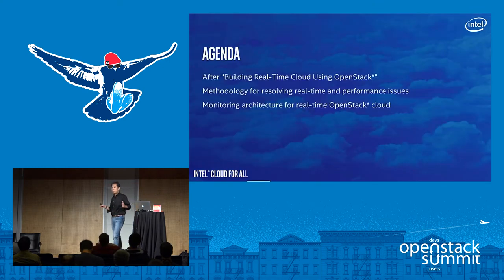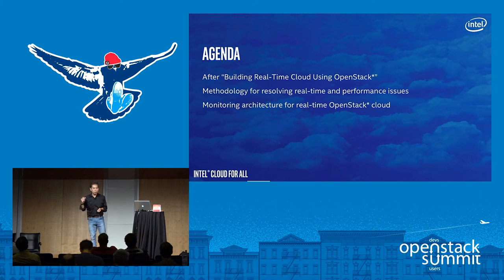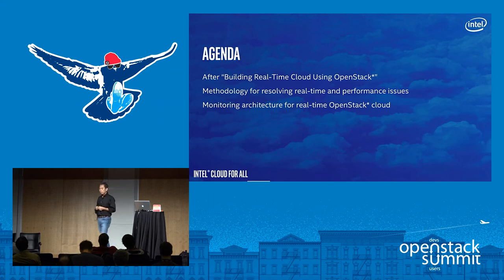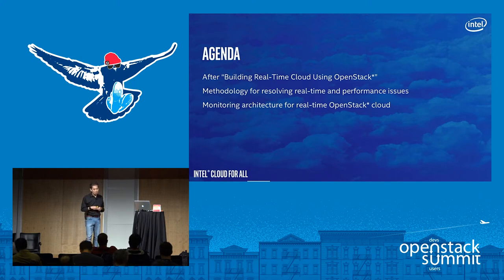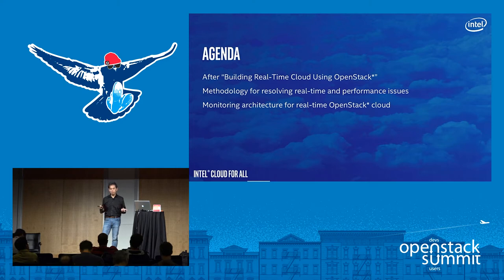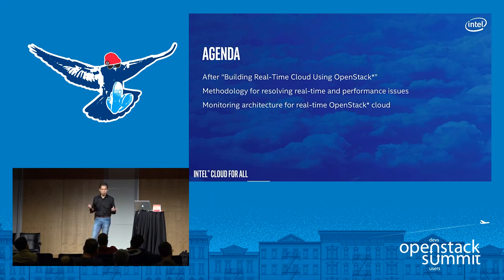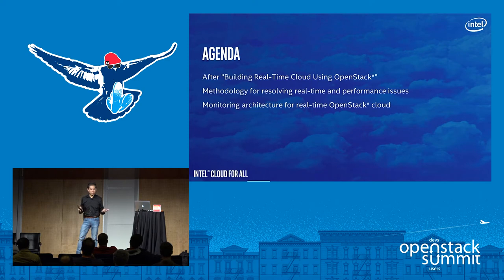This is actually a sequel to the presentation we gave at the last summit in Austin, which was basically about building a real-time cloud using OpenStack. Once you build a real-time cloud, it's possible, or even very likely, you're going to see a problem. So to solve that kind of problem, we need to have a structured way of handling those problems. I'll share some simple methodologies to solve real-time problems, and then we propose some monitoring architecture for real-time OpenStack.